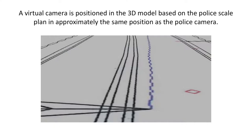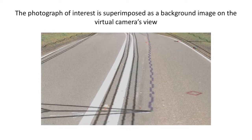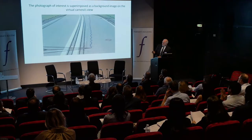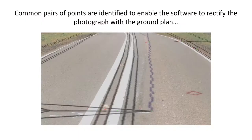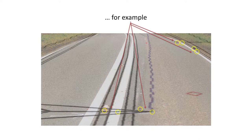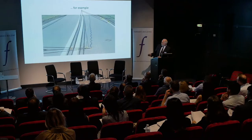I'll now briefly go through the mechanism for rectifying the images and placing the information on the ground plan. First of all, a virtual camera is placed within the software to give a view similar to what the photograph showed. It's by identifying common points within the photograph and the plan — such as the start of the scuff mark and the scuff mark on the plan — that the software combines the two.